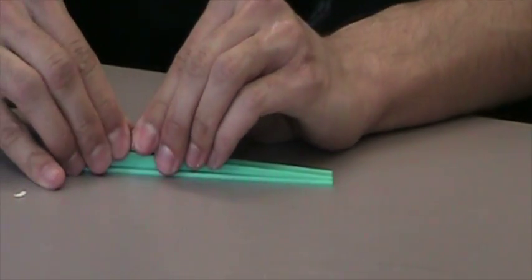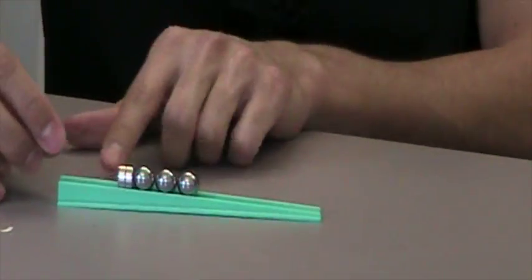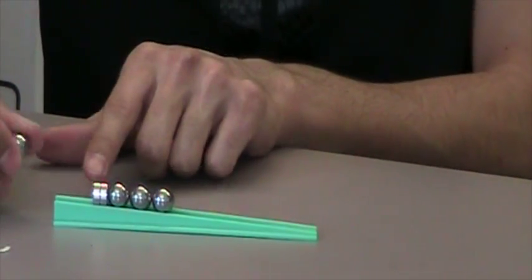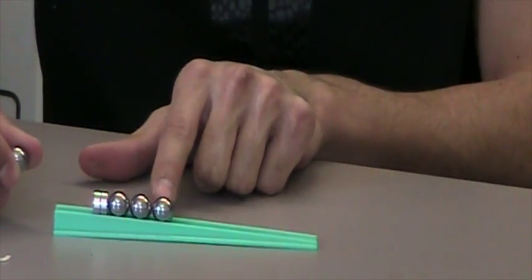As a result, when this ball comes in and impacts here, momentum is conserved, and this ball is able to be shot out.